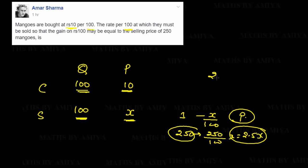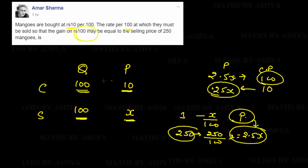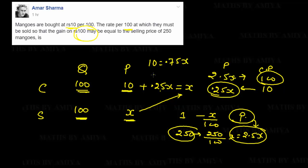The profit of 2.5X happens when the cost price is Rs.100. But in our chart the cost price is Rs.10, so at cost price Rs.10 the profit is 0.25X. Therefore, cost price plus profit equals selling price: 10 + 0.25X = X. Solving this, 10 = 0.75X, giving X = 10/0.75 = 40/3. So our answer is Rs.40/3.